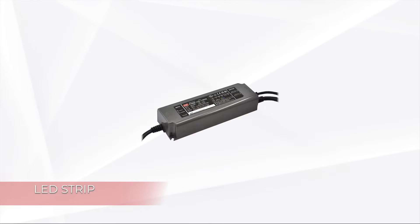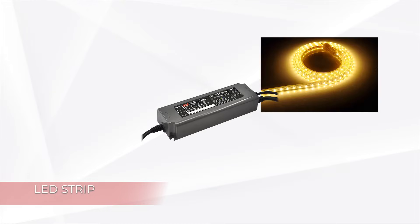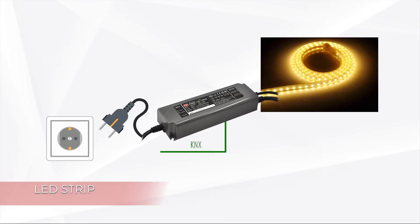After ETS programming, the driver is placed at its final location and the LED strip is connected to the output of the driver. Then the KNX cable is connected for telegram commissioning, followed by connection to 230 volts AC mains voltage. When the driver receives a command from a push button or any other KNX input device, the light is controlled to turn on, off, or dimming.